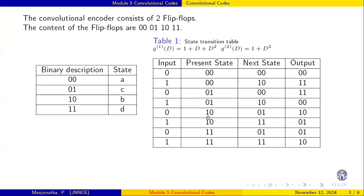For state 01 with input 0: the 0 enters, the 1 comes out of flip-flop 2, giving next state 00. Output: 0+0+0 = 0 for first part, 0+1 = 1 for second — output is 01. For state 10 with input 0: the 1 moves to next flip-flop, giving next state 01. Output: 0+1+0 = 1, and 0+0 = 0 — output is 10. The table is prepared similarly for all states.